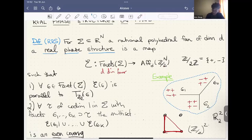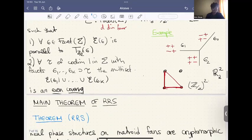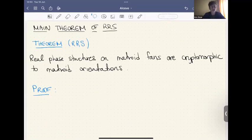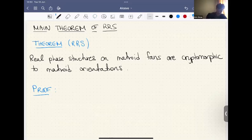So our main theorem is that from the paper with Arthur Renaudino and Johannes Rau is that a real face structure on matroid fans are cryptomorphic to matroid orientations. So if you can manage to do this assignment of affine spaces to each top dimensional face and it satisfies condition one and two, then your matroid is orientable. So the proof, I'll just say really quickly, it's an easy check. So easy to check that the assignment that I described before using topes is a real face structure. So we just have to check that it satisfies axiom one and two.